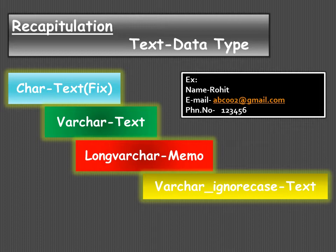If the length specified is 10 and the name occupies only three or four bytes, then the rest of the bytes will be padded with white spaces. Whereas in the case of CHAR, whether the full length is used or not, it will still be occupied and padded with white spaces.